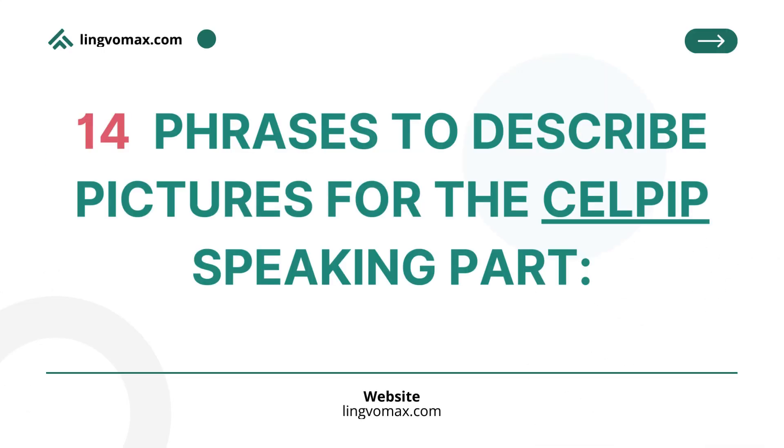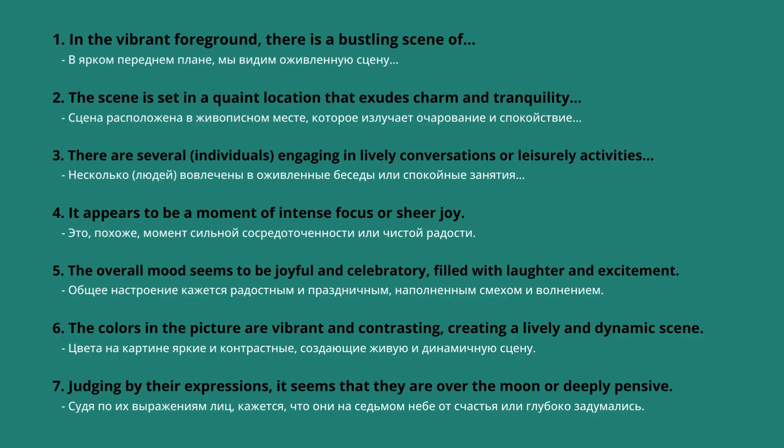Here are fourteen phrases to describe pictures for the CELPIP speaking part. One: 'In the vibrant foreground, there is a bustling scene of...' Two: 'The scene is set in a quaint location that exudes charm and tranquility.' Three: 'There are several individuals engaging in lively conversations or leisurely activities.' Four: 'It appears to be a moment of intense focus or sheer joy.'